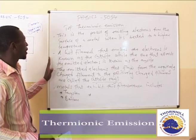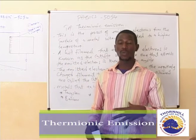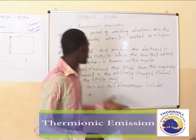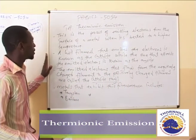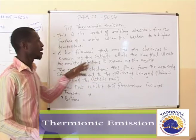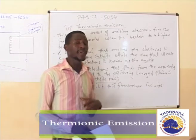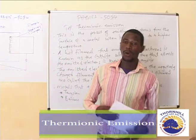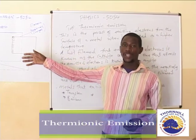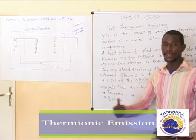A hot filament — which is the metal we are talking about — after being heated, will have electrons that escape from its surface. A hot filament that emits the electrons is known as the cathode, while the one that attracts the emitted electrons is known as the anode. On the right we have a diagram showing an example of what happens when we heat a metal.